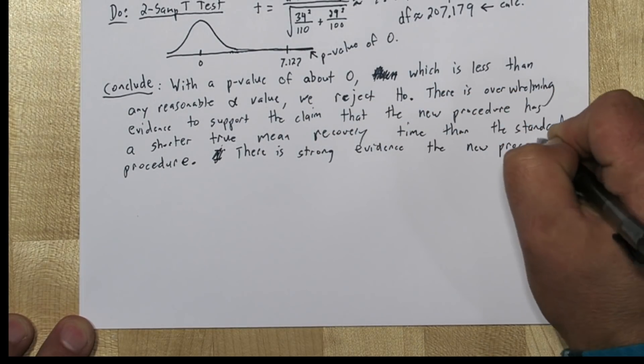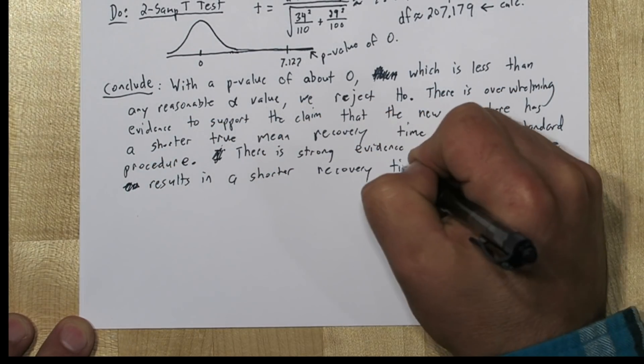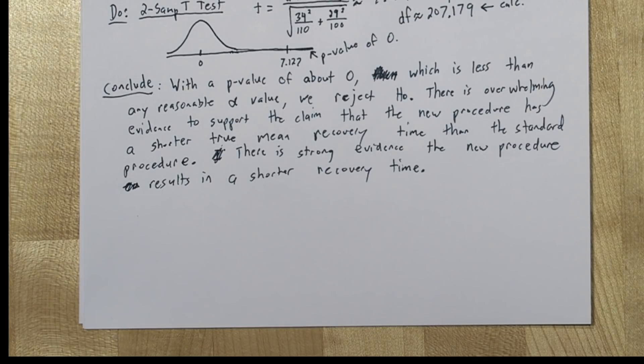Now going back to part A, that means there's strong evidence the new procedure results in a shorter recovery time. Now that last line in the conclusion is because this was an experiment, we can actually establish causation.